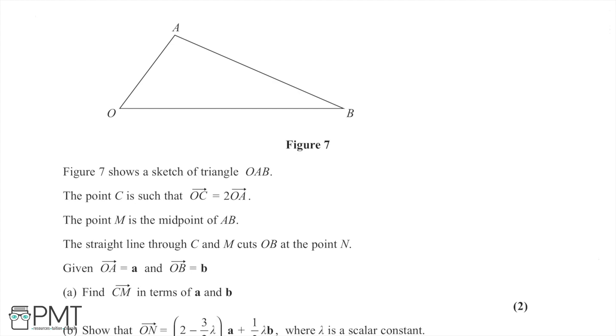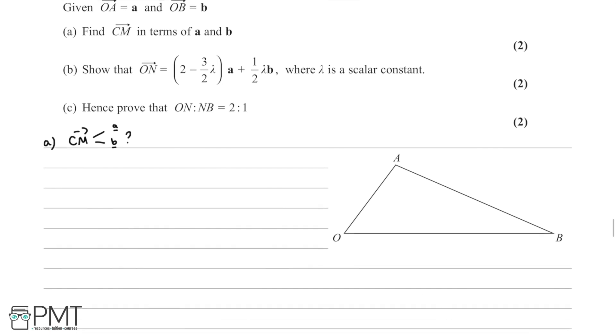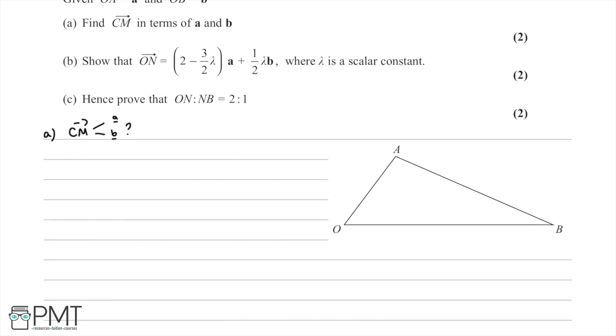Question A is asking us to find the vector CM in terms of a and b. The first step here is going to be to annotate the diagram.